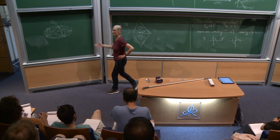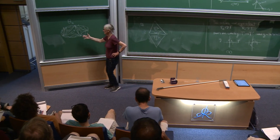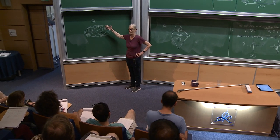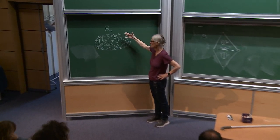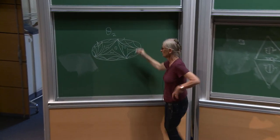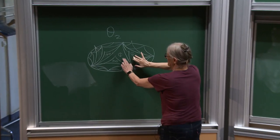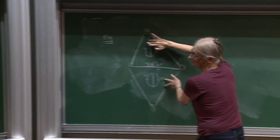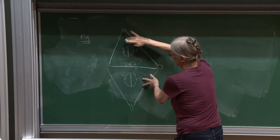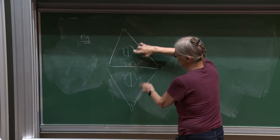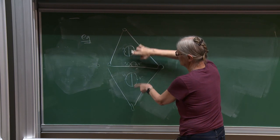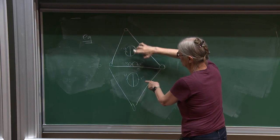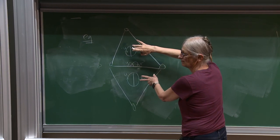I cheated while you guys were out drinking coffee — I drew the picture I was supposed to draw. This is a picture of O2. Here are two simplices. Notice they both correspond to theta graphs, or cages, or whatever you want to call them.